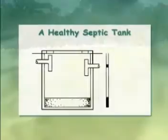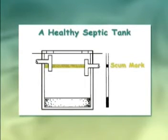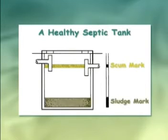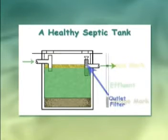The contents of a healthy septic tank should form three layers. Lighter waste such as fats and oils float to the surface and form a scum layer. Solids settle to the bottom of the tank and form a layer of sludge, and after a settling period, the effluent in the centre will flow to the land application area.